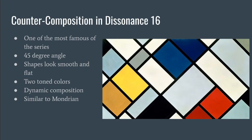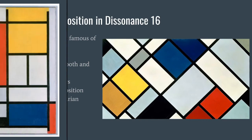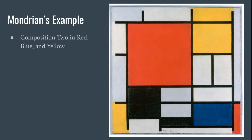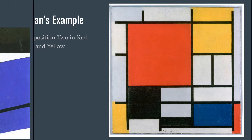By using this balance of abstract forms, Theo creates a De Stijl work that is similar to that of Mondrian's. This is an example of one of Mondrian's famous works, called Composition 2 in Red, Blue, and Yellow. Mondrian was the other person who co-created the De Stijl movement with Van Doesburg, so it makes sense that their work would look so similar to each other's.